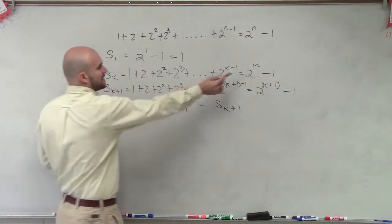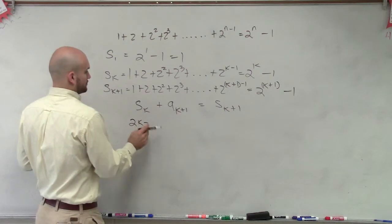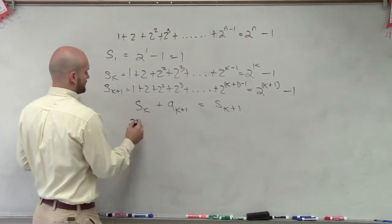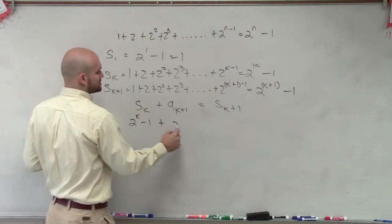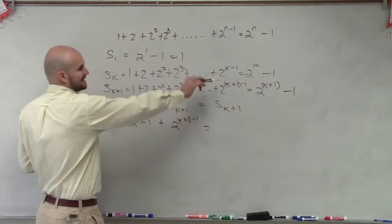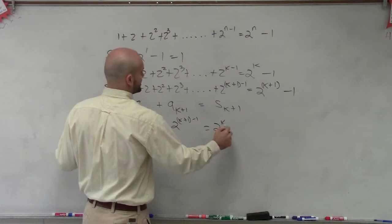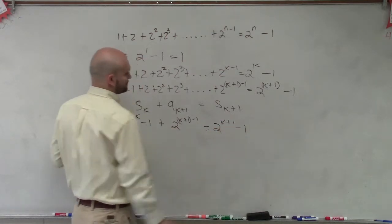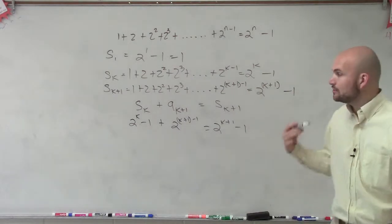So I determine what is my sum of k? My sum of k is 2 to the k minus 1. That's raised to the power. Plus my next term is 2 to the k plus 1 minus 1. And that has to equal the sum of k plus 1, which is 2 to the k plus 1 minus 1. All right.